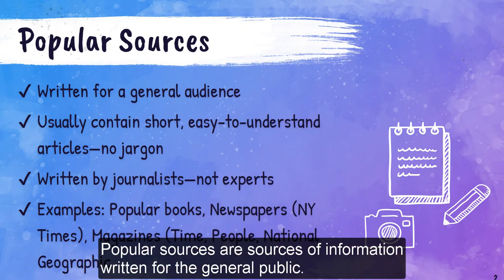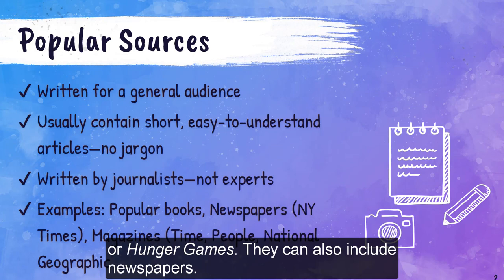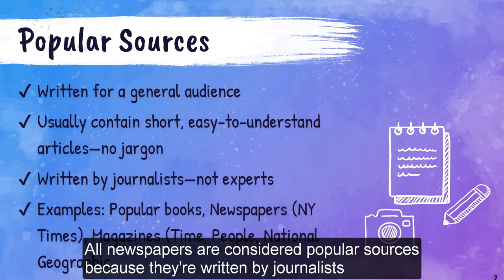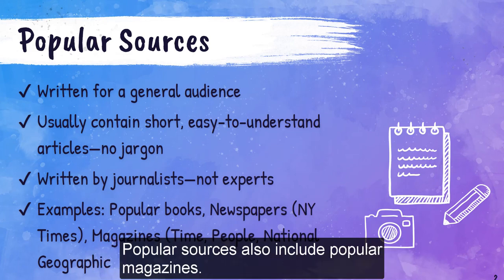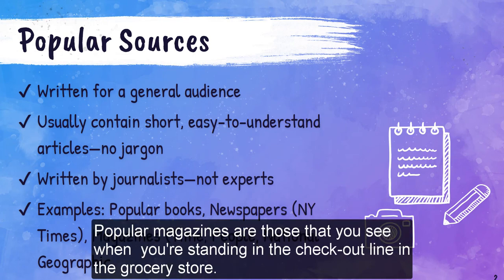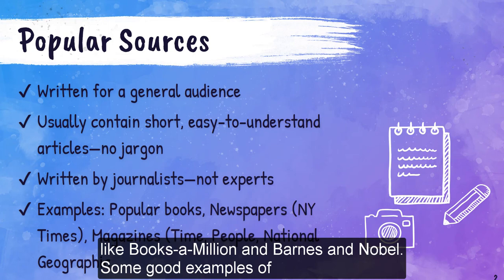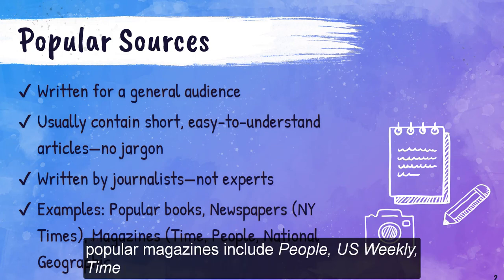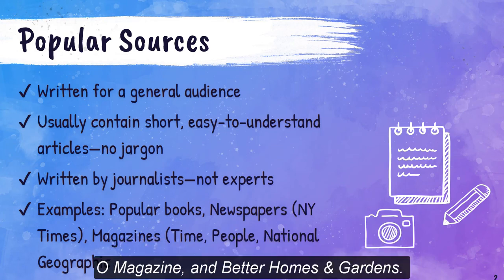Popular sources are sources of information written for the general public. These can include popular books — think Harry Potter and the Sorcerer's Stone or Hunger Games — as well as newspapers. All newspapers are considered popular sources because they're written by journalists for a general audience. Popular sources also include popular magazines: those you see in the checkout line of the grocery store or at stores like Books-A-Million and Barnes and Noble. Some good examples include People, Us Weekly, Time, Newsweek, National Geographic, Popular Mechanics, O Magazine, and Better Homes and Gardens.